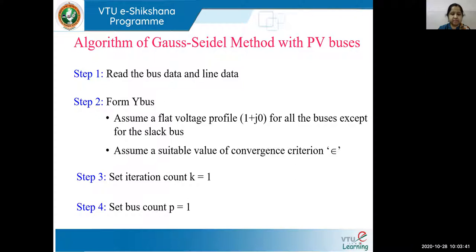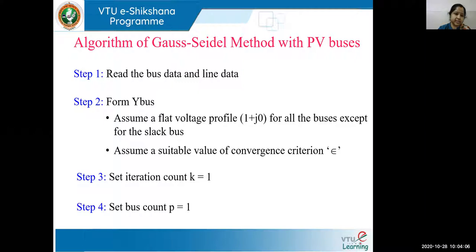Before going to step number five, let us know what quantities are available for PV buses. We know the quantities available for PV buses are the real power and the magnitude of voltage. The Q limits will also be specified — the minimum and maximum value of reactive power will be present. We need to find out what is the actual value of reactive power at that particular bus and whether it is within the limit or not. If the Q limits of that particular PV bus are within the limit, the bus will be treated as a PV bus. If it violates the limit, it will be treated as a PQ bus.